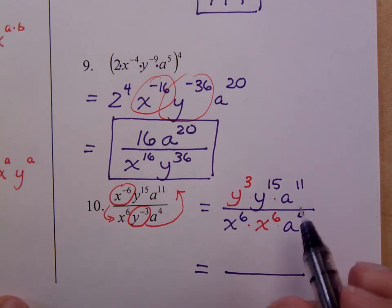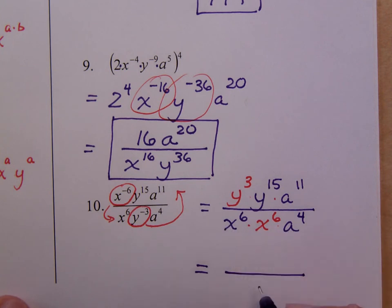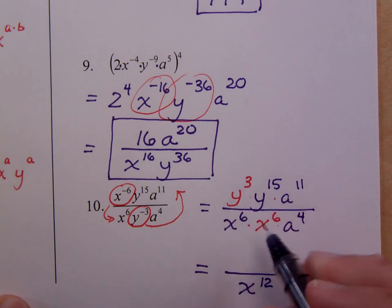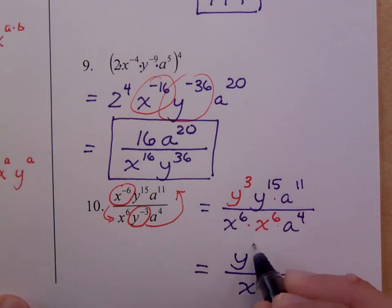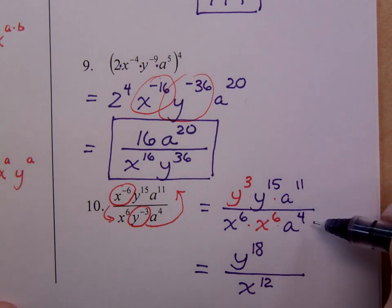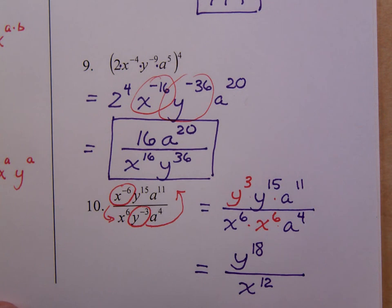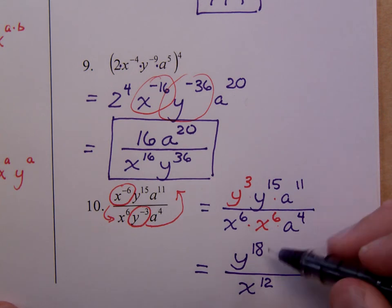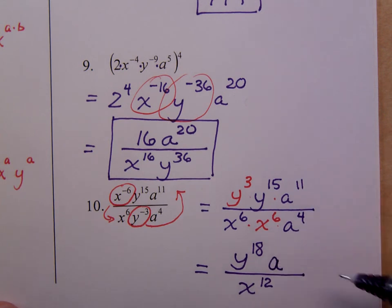Notice that all of your x terms are in the denominators. So that's going to give you x to the 12th. All of your y factors are in the numerators. So that's y to the 18th. But you have a in both the numerator and denominator. Just like we've seen before in this worksheet. Where do you have more factors of a? I've got more factors of a in the numerator. How many more factors are there? The answer is 7.